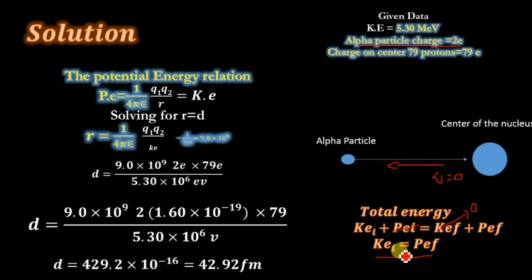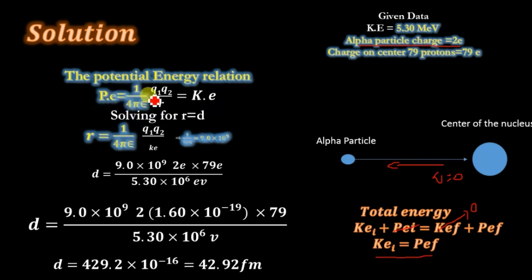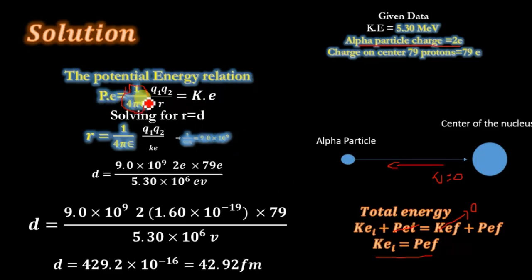Using this equation we will determine the distance of closest approach. According to the potential energy formula, potential energy equals 1 over 4 pi epsilon naught times q1 q2 divided by r, and this equals the kinetic energy. Do not confuse this with the Coulomb force equation: F equals 1 over 4 pi epsilon naught times q1 q2 by r squared. Here we are dealing with only r because potential energy equals k q1 q2 by r. This whole constant term has a value of 9.0 times 10 to the power 9.